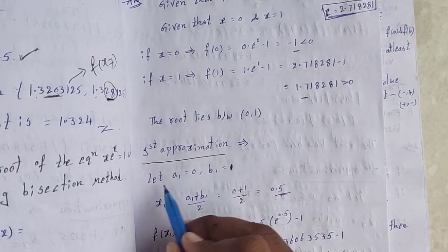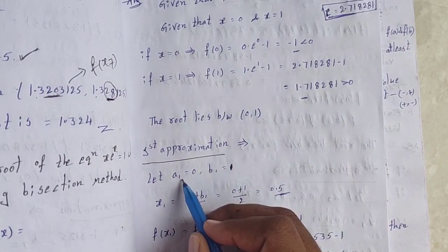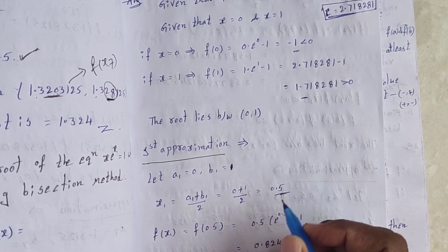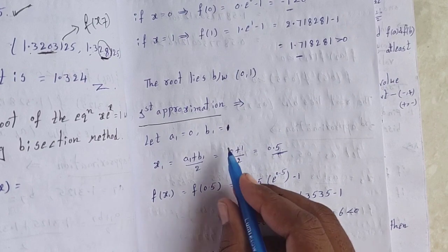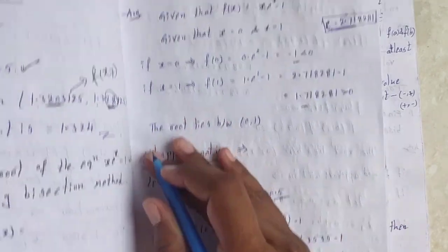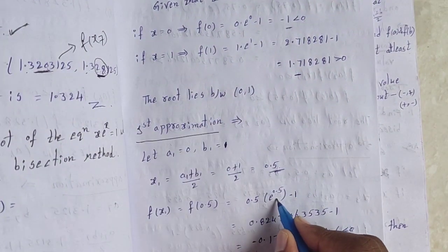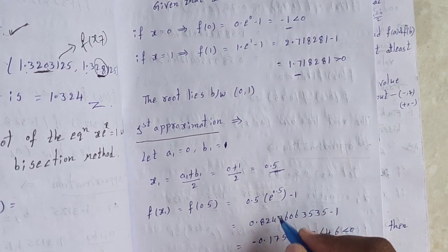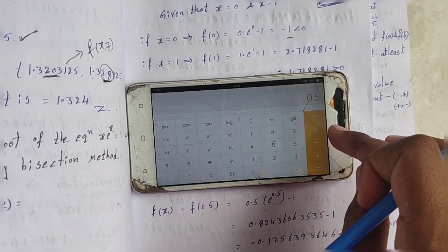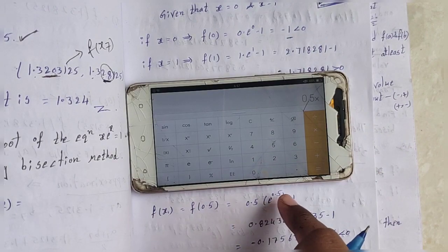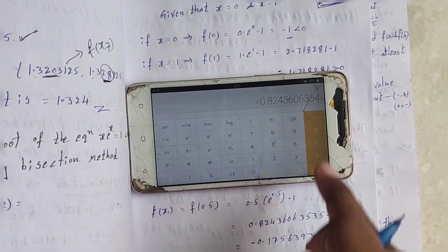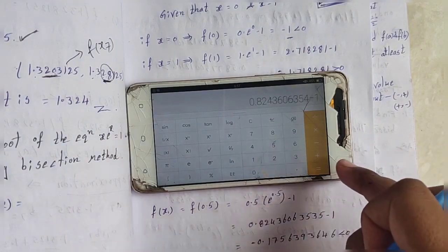First approximation: let a1 = 0, b1 = 1. The mean value x1 = (a1 + b1)/2 = (0 + 1)/2 = 0.5. Now compute f(x1): substitute x1 = 0.5 into x·eˣ − 1, giving 0.5·e^0.5 − 1. The e^0.5 value is approximately 0.824, so f(x1) is a negative value.